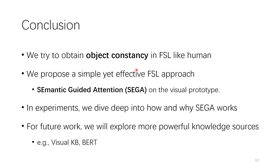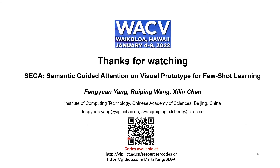In conclusion, we try to obtain object constancy in few-shot learning like humans. We propose a simple yet effective few-shot learning approach. In experiments, we dive deep into how and why it works. For future work, we will explore more powerful knowledge sources like visual knowledge bases and other learning paradigms. Thanks for watching. Our code is available at the provided links.